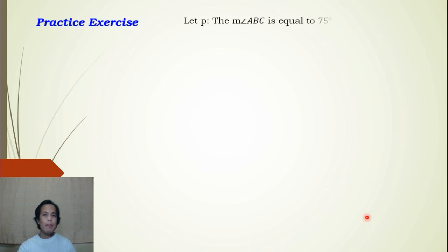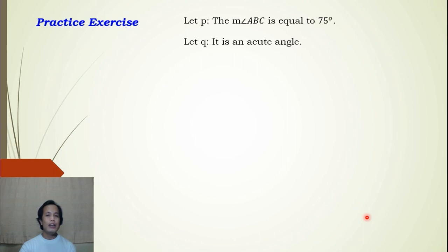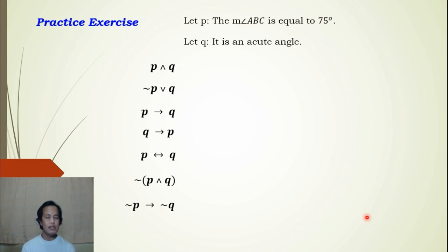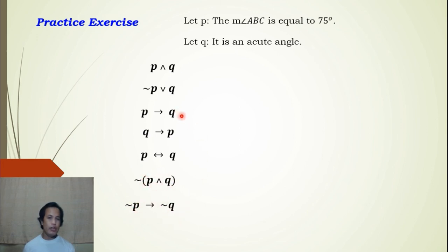Before we go, let us have a practice exercise. We let p: the measure of angle ABC is equal to 75 degrees, and q: it is an acute angle. Write the compound proposition using these symbolic forms: conjunction (p ∧ q), disjunction (~p ∨ q), implication (p → q), reverse implication (q → p), biconditional, negation of the conjunction, and negation of the implication.